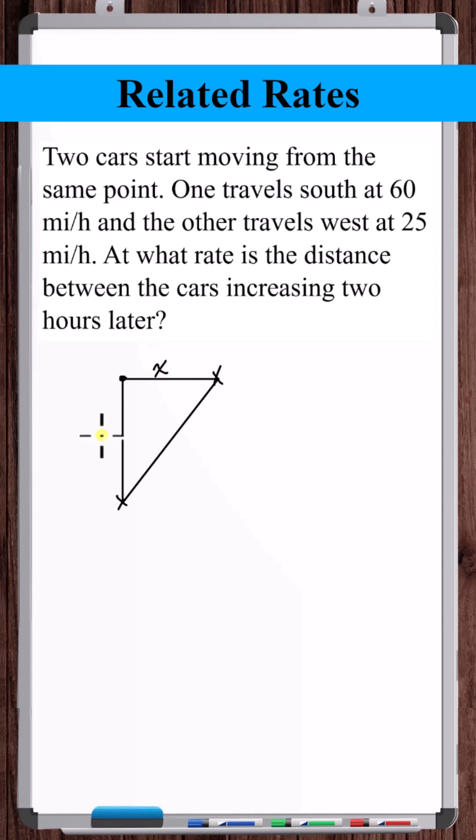We'll call this distance x and this distance y. With one car traveling south and one west, this is a right angle. Call this distance d. We know the rate of change of x and y, and we want to find the rate of change of d.